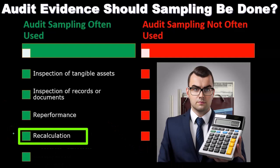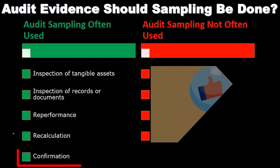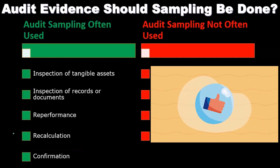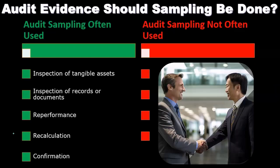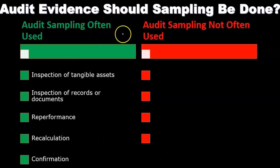Re-calculation is going to be similar — if we're going to recalculate or re-perform something, we're going to do that for some type of sample of the population. And then confirmation: confirmations are typically going to be done with some sample. We typically think of confirmation with things like accounts receivable, possibly accounts payable. If we want to test the accounts receivable, we may confirm that with particular customers. We probably aren't going to confirm all of the customers, so we will pick some type of sample and make determinations from that.